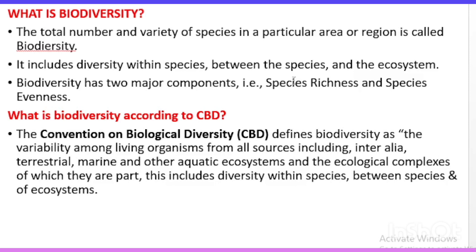Alpha diversity is calculated by counting the number of taxa — taxa means the species present in a given region, community, or ecosystem. In alpha diversity, we count the number of species at a given region or community. For example, on a mountain slope there will be a variety of woodland and grasslands, and when we count these things, that is alpha diversity.